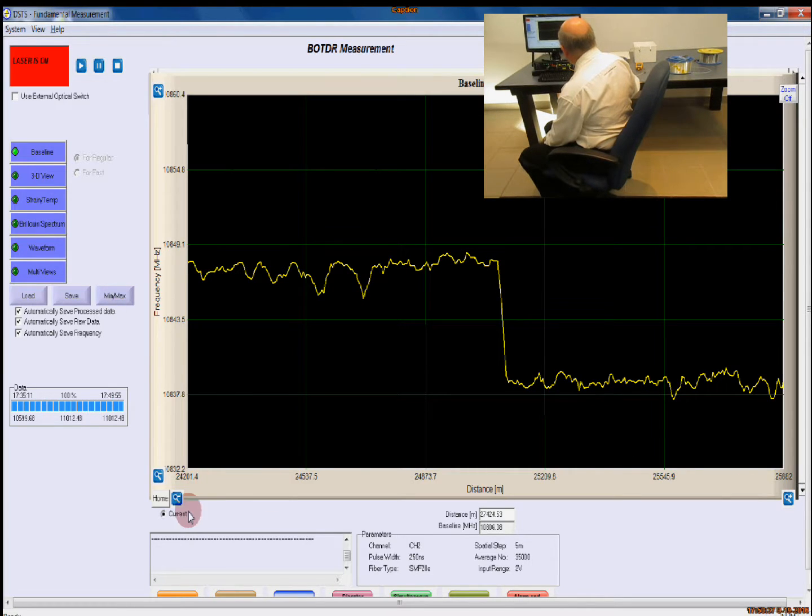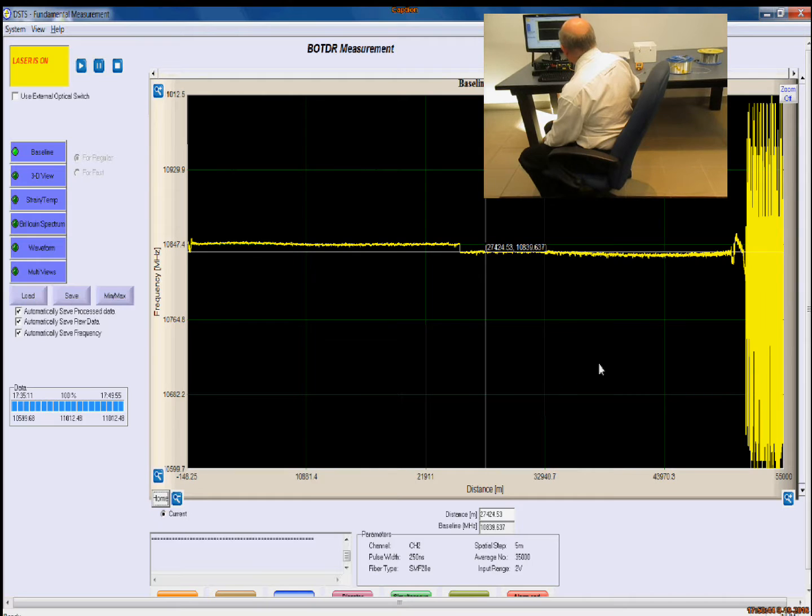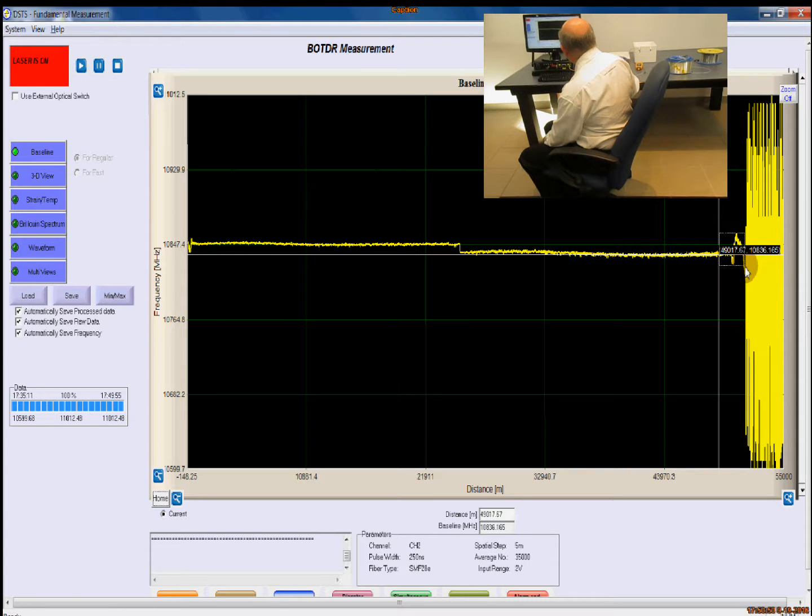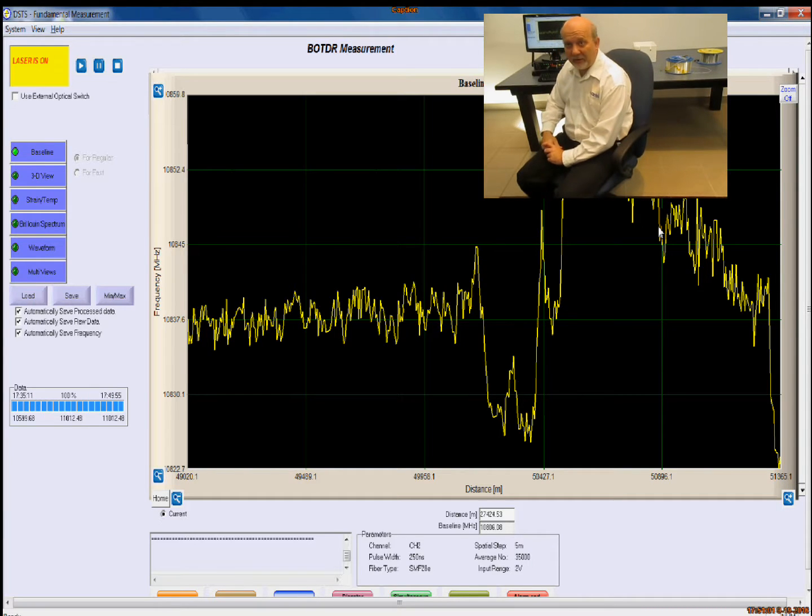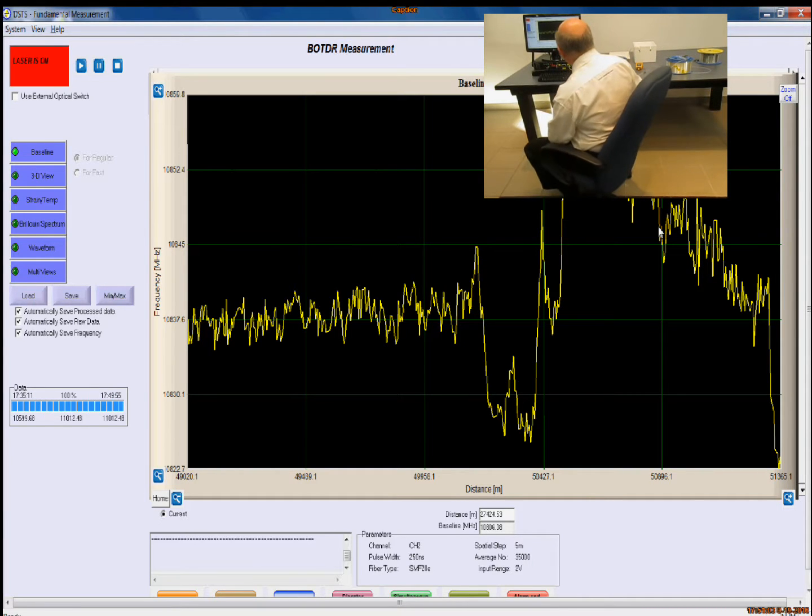If we zoom out, down at the end here, we have the transition from the end of the fiber to a short section of the fiber and then the last kilometer of fiber that we put on at the very end. This makes our baseline reading.